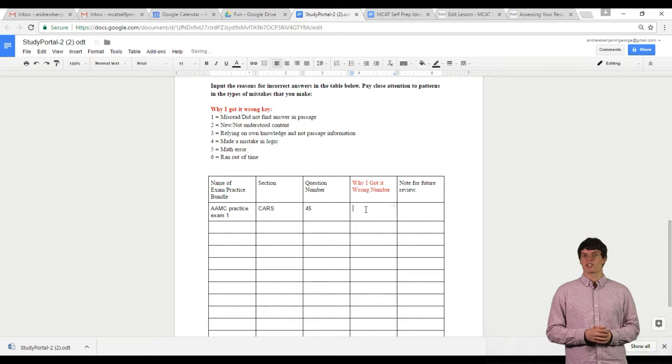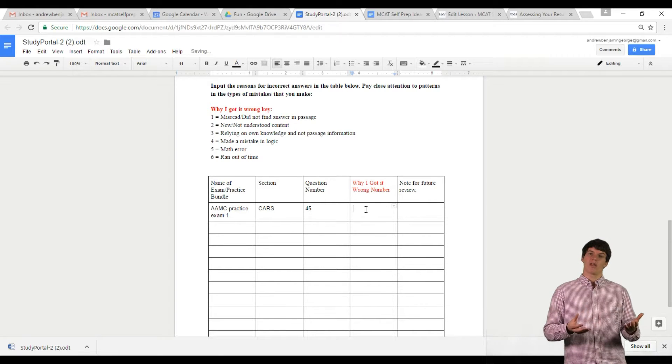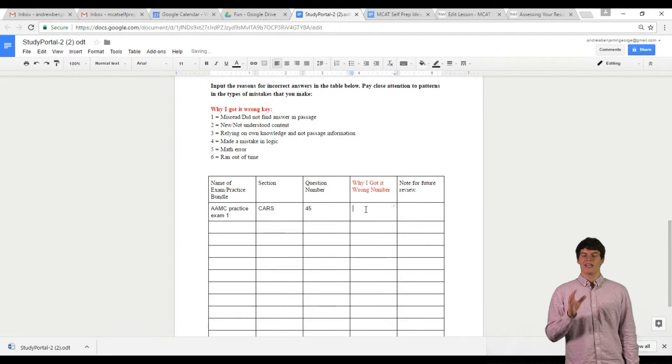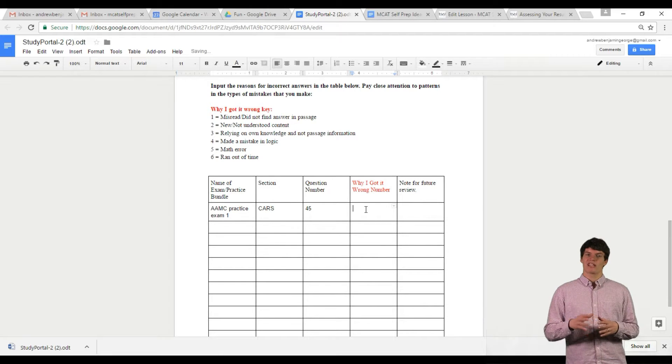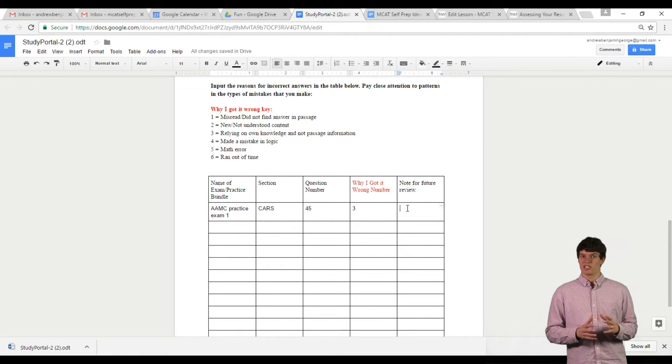Now, let's say that I got the question wrong because I didn't read the passage carefully enough but merely relied on my own knowledge. If this is the case, I would select number 3 according to this key at the top. Then I would input any notes that I want to remember when I come back to this question again later.